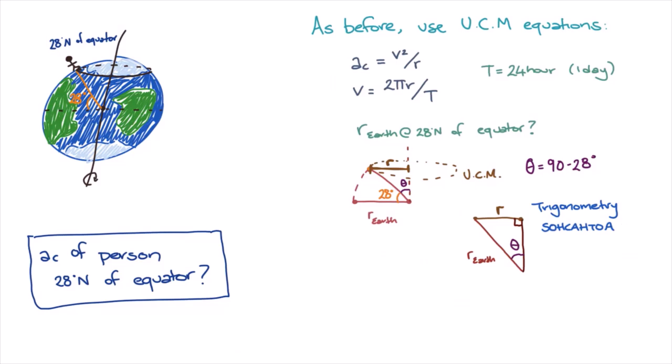From SOH-CAH-TOA, we know that sine of theta will equal r, the radius of the uniform circular motion path of a person standing at 28 degrees north of the equator, divided by r_earth, the radius of the uniform circular motion of the person standing at the equator, which is equal to the radius of the earth. Rearranging, we find that r equals r_earth times sine theta.